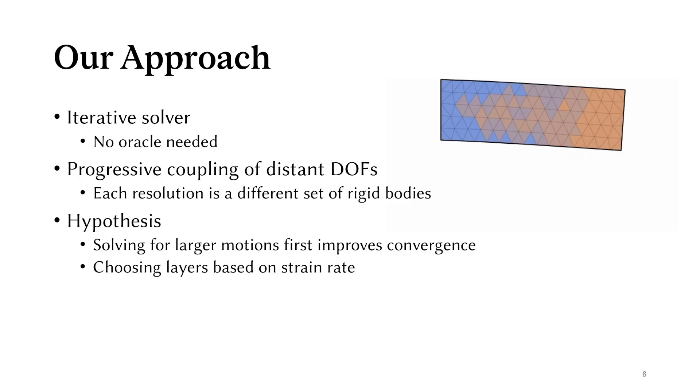We can emit the hypothesis that large motions are likely to impact the global deformation more than tiny elastic vibrations, so perhaps it's interesting to start with more aggressive layers first, and then gradually elastify. Then we also assume that gathering elements by strain rate is likely to give consistent motions, like it did for adaptive rigidification.